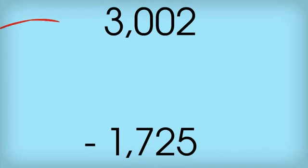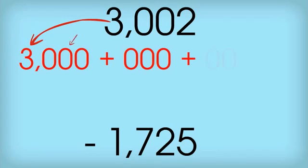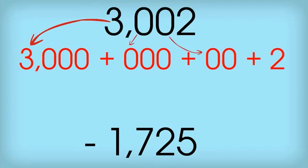The top number gets broken down into 3,000, zero hundreds to show that we don't have any hundreds, zero tens to show that we don't have any tens, and 2.